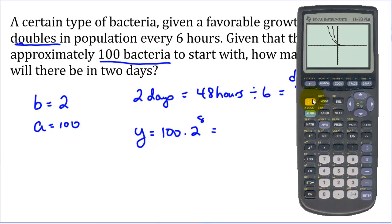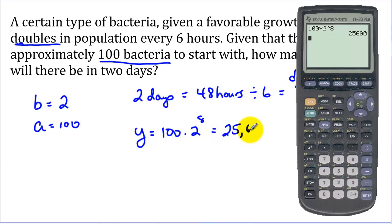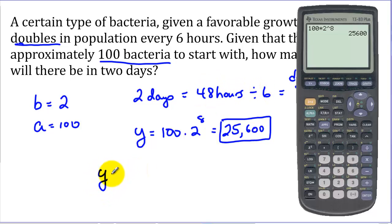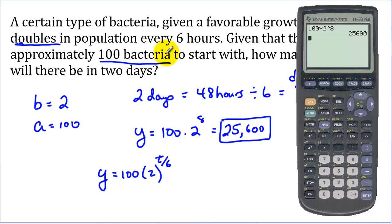We get 25,600 bacteria cells in two days — it grew quite rapidly. If we want to write a general model with t as the number of hours, we divide the number of hours by 6, so the model is y equals 100 times 2 to the power of t divided by 6. We could use this formula to compute the number of bacteria after 24, 48, or 72 hours — it doesn't even have to be evenly divisible by 6.